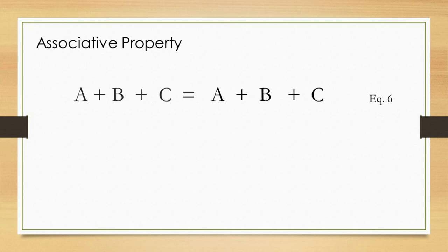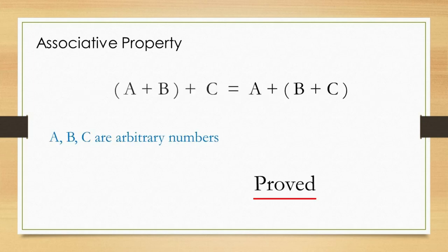As can be understood from the equation, the expression in the left arm perfectly matches that of the right. This means the associative property in addition has been proved. From the discussion above, it can be understood that the associative property in addition is proved for arbitrary numbers, or any numbers.